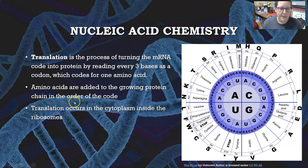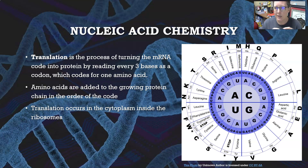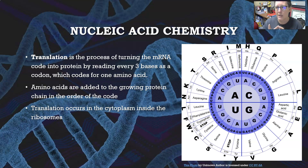The amino acids are added to the growing protein chain in order of the code, and this process of translation occurs in the cytoplasm inside the ribosome. If you have a genetic defect — something wrong at the genetic code level — it can translate into the wrong amino acid being added to the chain. That's where we can see some of the hemoglobinopathies, such as sickle cell, where there's a substitution of one amino acid for another, making the hemoglobin chain behave in a different way.